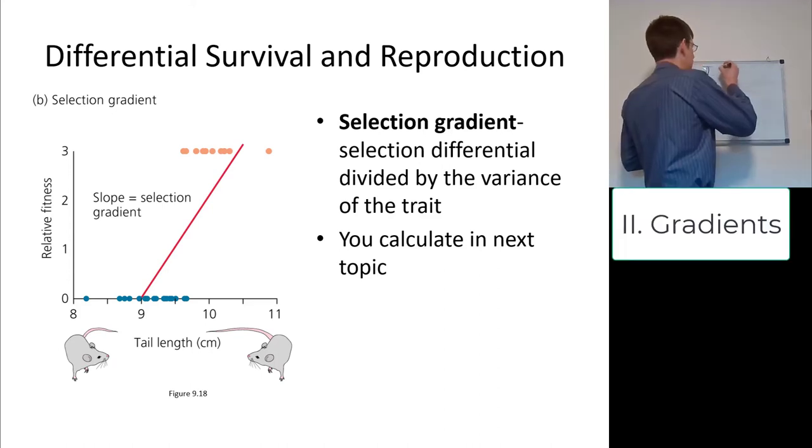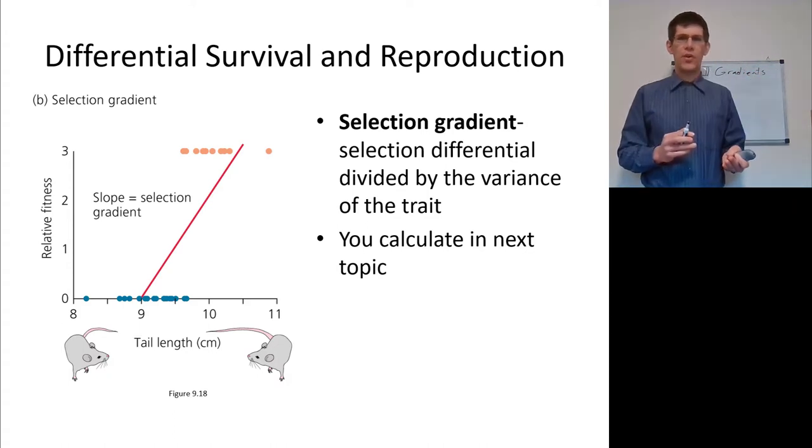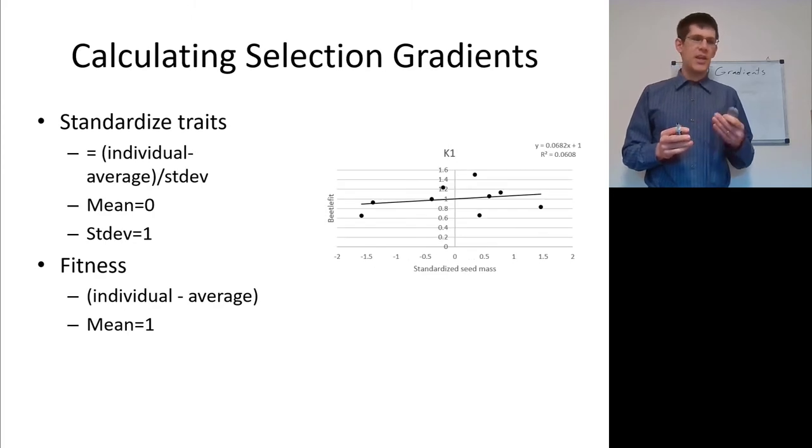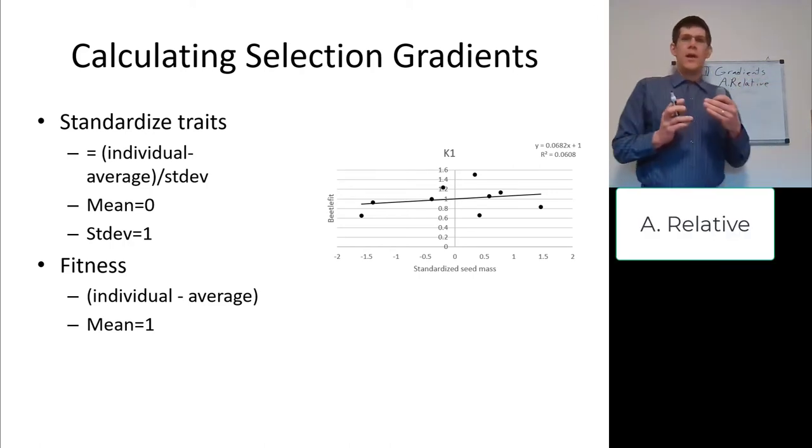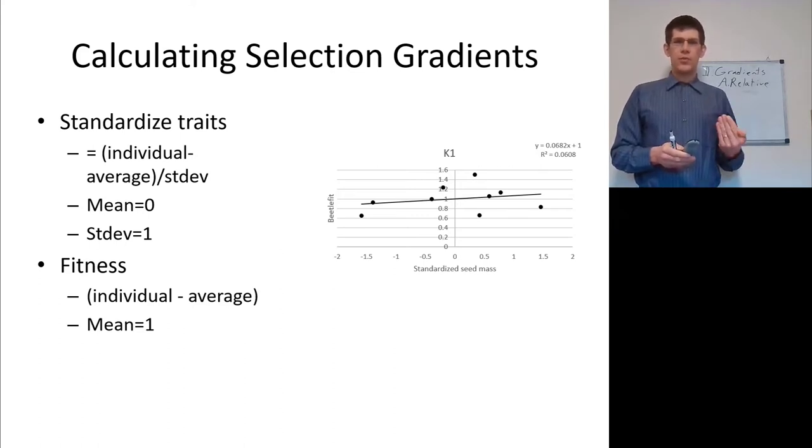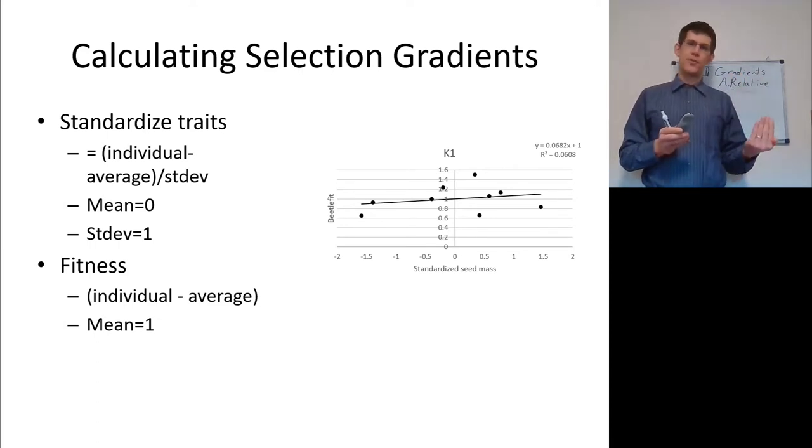A gradient, on the other hand, gradients are not specifically binary but are going to be comparing how much. We're calculating in the next topic, but it's really looking at the differential divided by the variance of the trait, or more specifically, each individual is going to be relativized to the group. So the standardized trait is on the x-axis, and that's your individual. The individual trait minus the average for that population divided by the standard deviation. So how much do you vary? How much variance exists on average? It's got a mean of zero, so this actually helps center these traits around a zero because it's either negative or positive with a standard deviation of one.